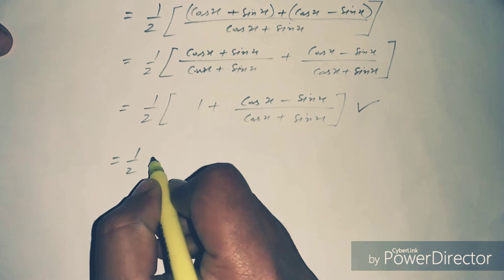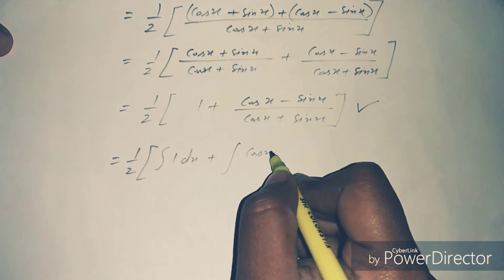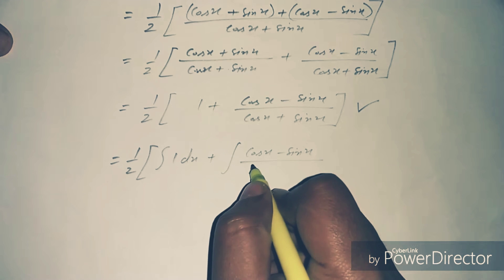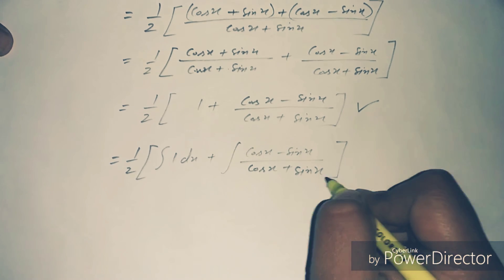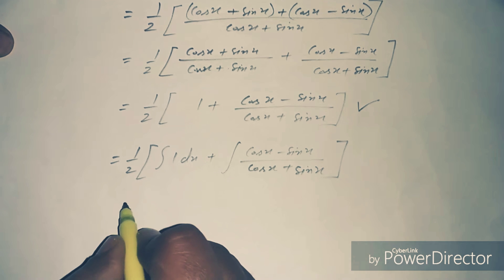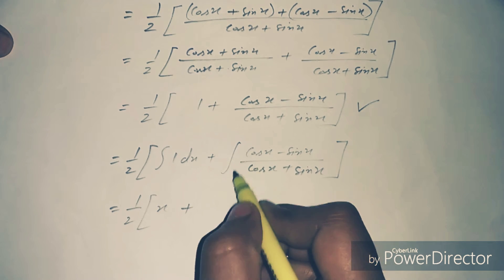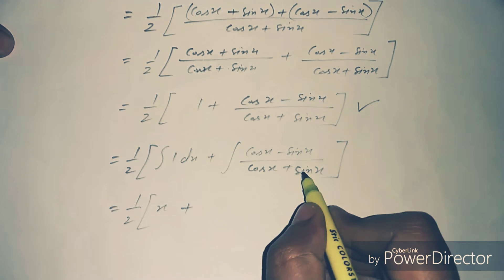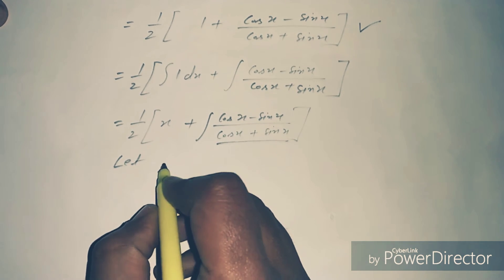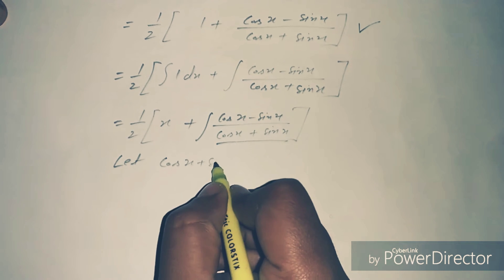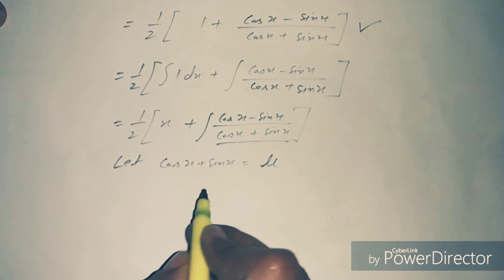Now we integrate this equation. We get 1 by 2 times the integration of 1 dx plus the integration of cos x minus sin x divided by cos x plus sin x. The integration of 1 is simply x.